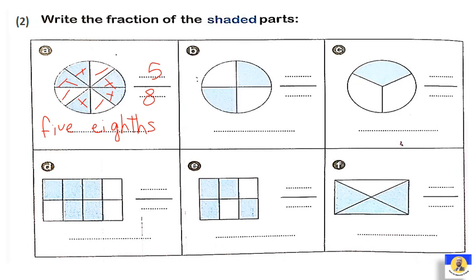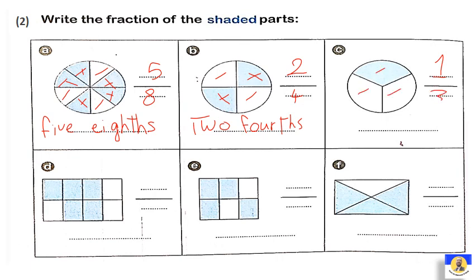The next one: how many parts here are shaded? One, two. بس. Over — 1, 2, 3, 4. So, it will be 2 over 4, or 2 quarters. The next one: how many shaded parts here? It's 1 over the total parts — 1, 2, 3. So, it will be 1 third.